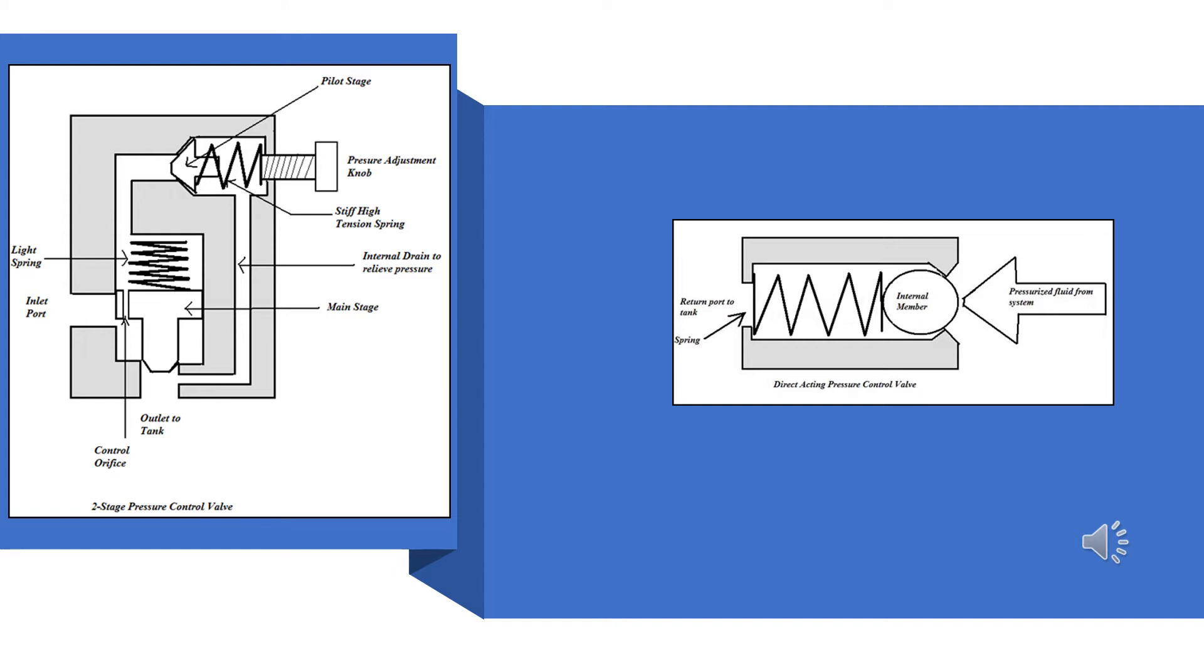As fluid pressure builds against the face of the movable member, it pushes back on the spring, causing it to compress. The moment that the spring is compressed, the moment that the movable member backs up against the spring and allows any kind of an opening, fluid will begin to pass it.